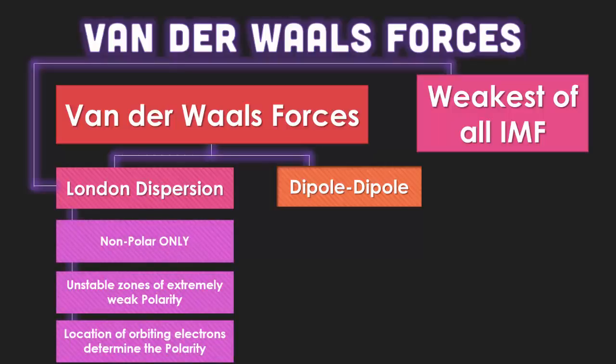London dispersion forces are only found in nonpolar molecules. Because nonpolar molecules don't actually have a positive or negative side, there is going to be a very, very weak polarity. Imagine a cup of water shaking back and forth as you walk with it — it's kind of like that. The moment there is a slight positive side to your molecule and a slight negative side, it immediately shifts back to neutral. All this means is the location of the orbiting electrons determines the polarity.